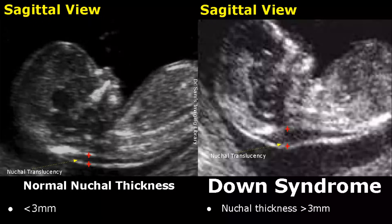Hello everyone, this is Dr. Sam. In this video we will see ultrasound soft markers for Down syndrome. Soft markers are features that may indicate aneuploidies in a fetus. We will compare these soft markers with a normal fetus.